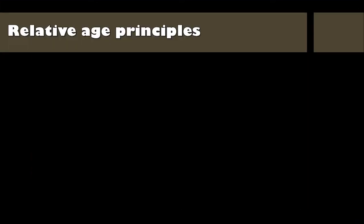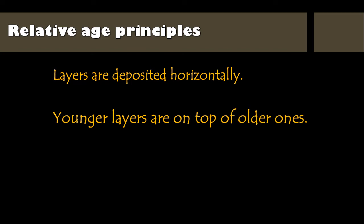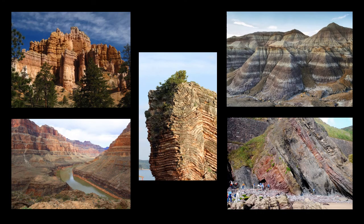Let's review the three principles of relative age that we've learned. Layers are deposited horizontally. Younger layers are on top of older ones. Faults and intrusions are younger than the layers they go through. Using these and other principles, scientists try to figure out the exact sequence of events that created the interesting rock layers we find all around the world.